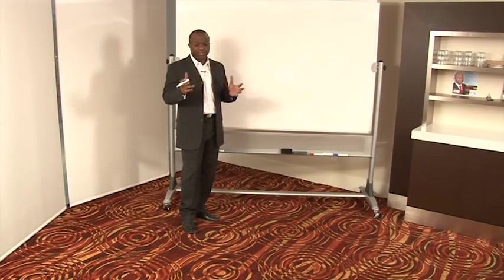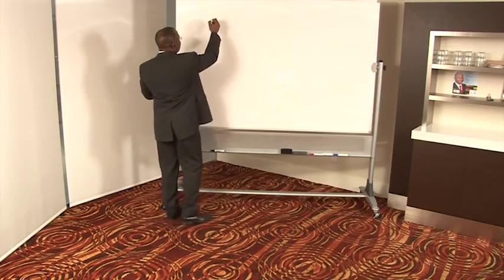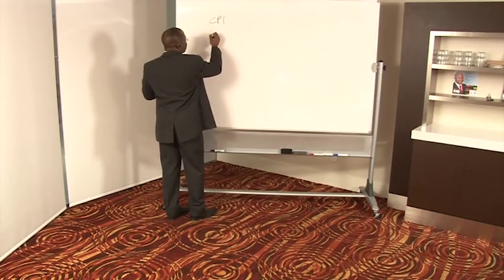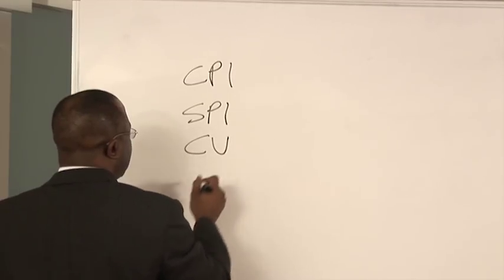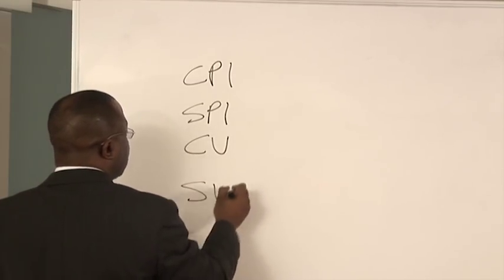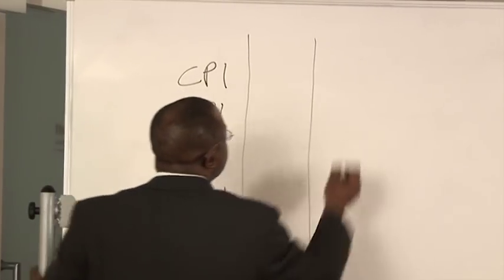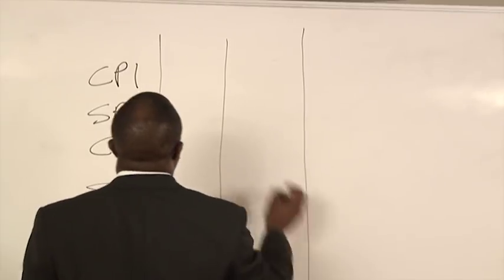So there are four earned value metrics that we need to really understand for problems on the PMP. These metrics are the derivative metrics and they are CPI, Cost Performance Index, SPI, Schedule Performance Index, Cost Variance and the Schedule Variance. Now there's a very simple trick to understand what this is all about.